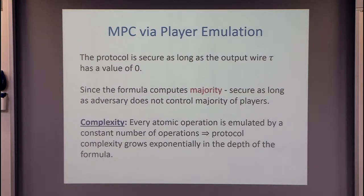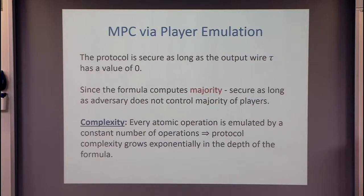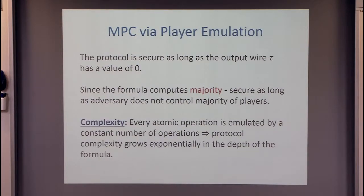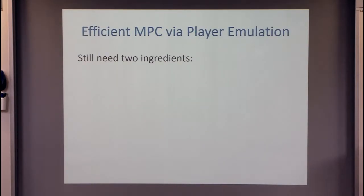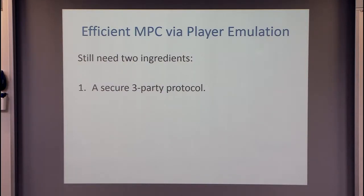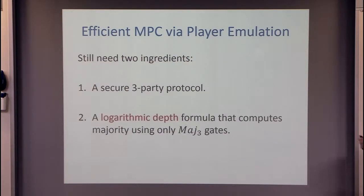What about the complexity? In each layer of the formula, we replace every step by a constant number of steps — the three-party MPC protocol used to emulate that step. So in every layer we pay a constant multiplicative overhead, and overall we pay exponentially in the depth. To get an efficient protocol, we need a logarithmic-depth formula. This brings us to two missing ingredients: first, a secure three-party protocol; and second, a logarithmic-depth formula computing the majority function using only three-input majority gates.